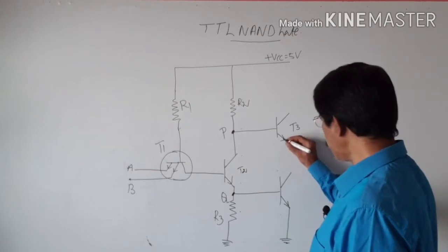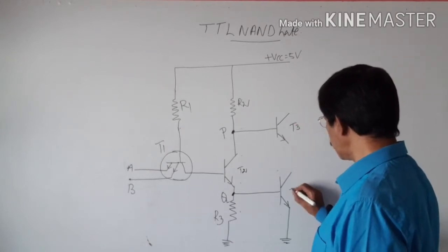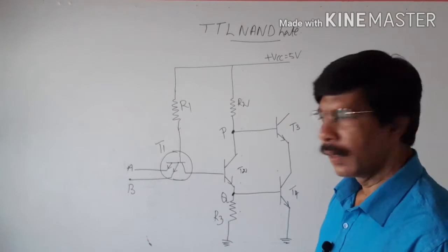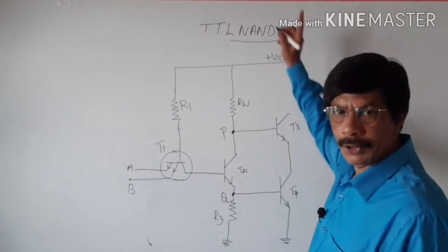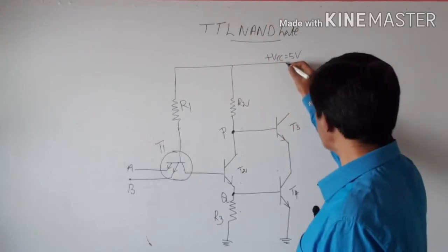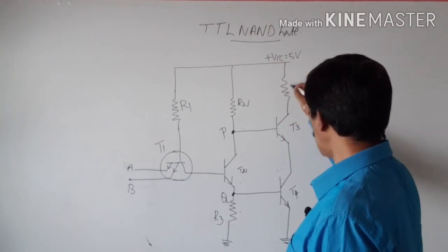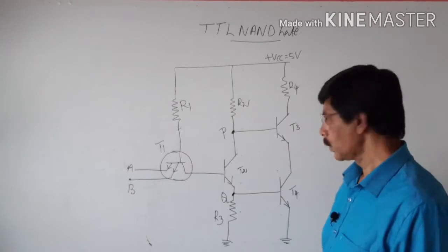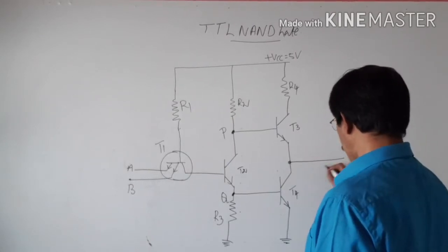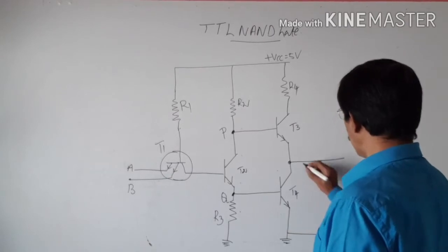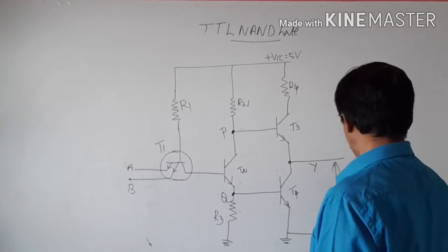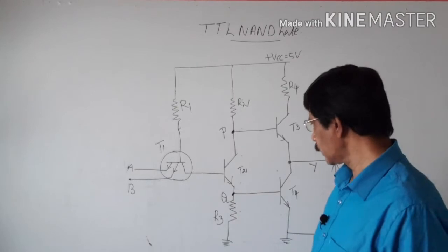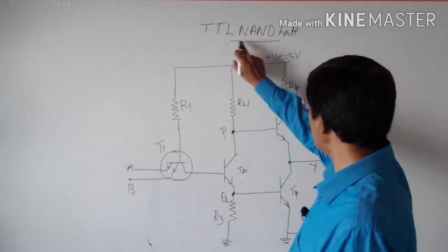The emitter of T3 is connected to the collector of transistor T4. The collector of T3 is connected to plus 5V through resistor R4. The output Y is measured between this point and ground. This is the complete circuit for the TTL NAND gate.